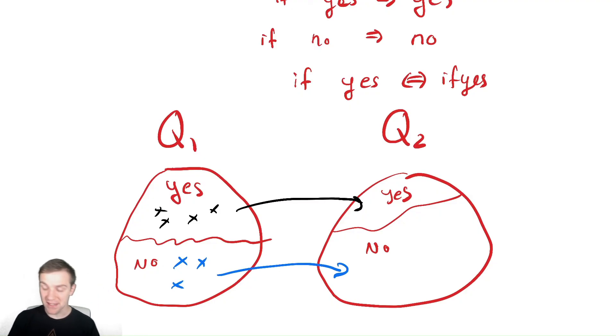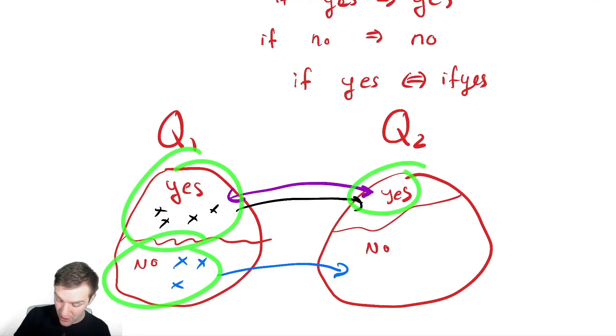An alternative way of doing this is instead of showing that what we just did is we showed that this top arrow goes both ways, which therefore necessarily all the noes would go to noes. So there are two ways we can do a reduction. Either show if the answer is yes, it goes to yes, and if the answer is no, it goes to no.